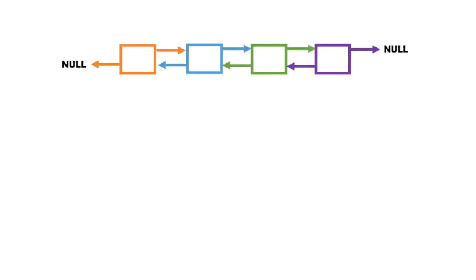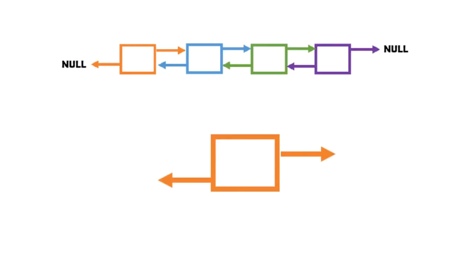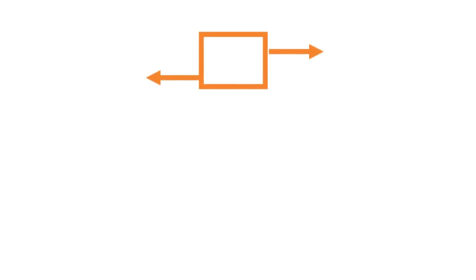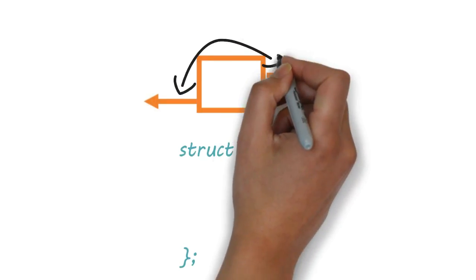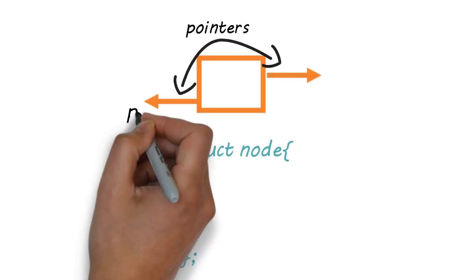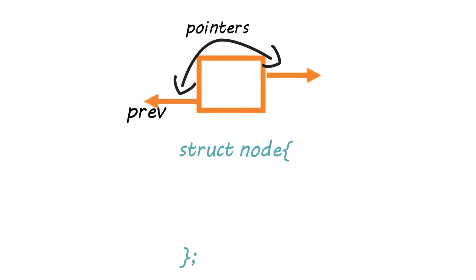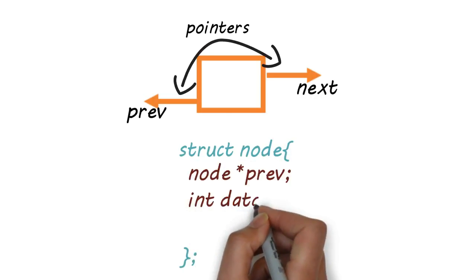We have to code a doubly linked list like this. Let's pick up a small node. We need something to create this structure, and the answer is struct. Now the next step: these two arrows are actually pointers. We will name one pointer as 'prev' and another one as 'next'. And we need a data variable to store data.